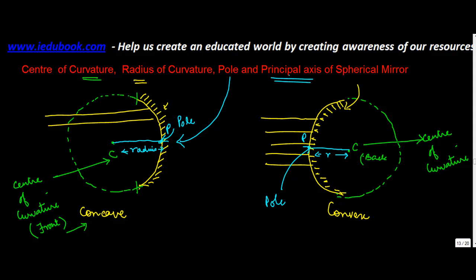And the principal axis is formed by joining P and C. So when you join this point P with C, what you get is basically the principal axis. It's the principal axis over here as well.